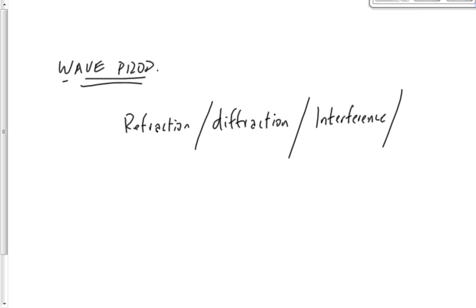The fourth property is polarization — the idea we can filter out all but one component of light. The electric and magnetic fields in light are always perpendicular to each other, but may point in various orientations. A polarizing filter allows only one orientation through, filtering out everything else. Since light undergoes polarization, it must be a wave.